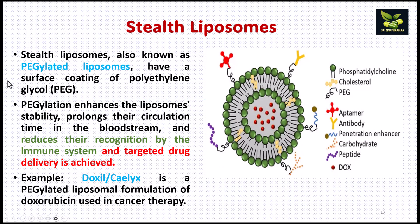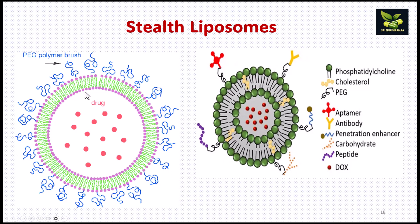PEG-coated or pegylated liposomes are called stealth liposomes. They have a surface coating of polyethylene glycol polymer, which enhances stability and prolongs their circulation time in the bloodstream because the immune system cannot recognize pegylated liposomes, thereby achieving targeted drug delivery. An example is Doxil — a pegylated liposomal formulation of doxorubicin used in cancer. In the diagram, you can see PEG on the outside; additionally, ligands such as aptamers, antibodies, penetration enhancers, carbohydrate peptides, and the drug Dox can also be incorporated.